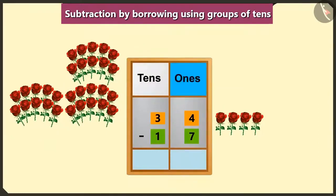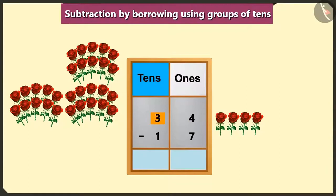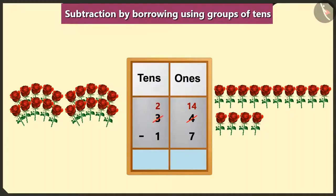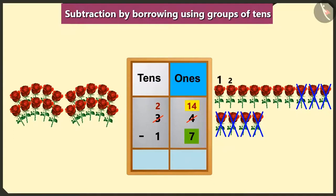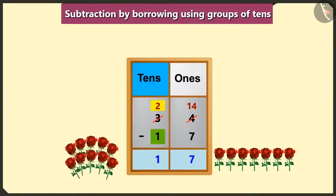First of all, we will write these numbers in the box of ones and tens and then perform the subtraction. Here we cannot subtract 7 from 4 in the box of ones, so we will borrow 1 ten from 3 tens in the box of tens. Now we will write 14 ones instead of 4 in the box of ones, and 2 tens instead of 3 tens in the box of tens. If we subtract 1, 2, 3, 4, 5, 6 and 7, there are 7 left in the place of ones. Now, if we subtract 1 ten from 2 tens, then we will have 1 ten in the box of tens.